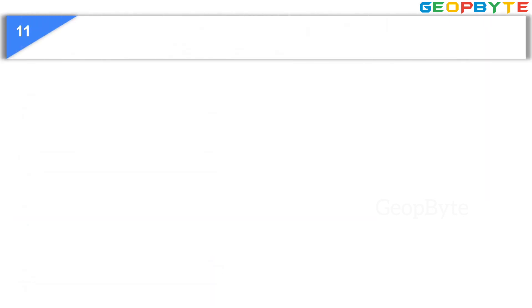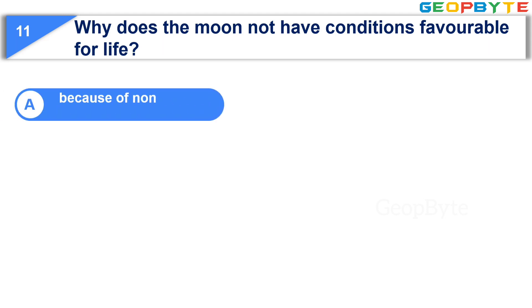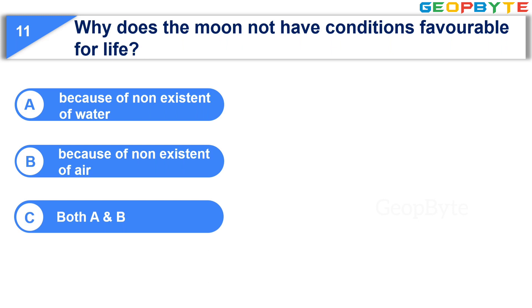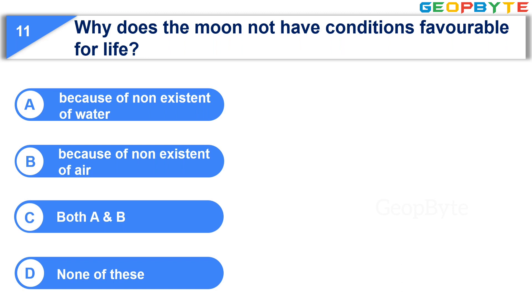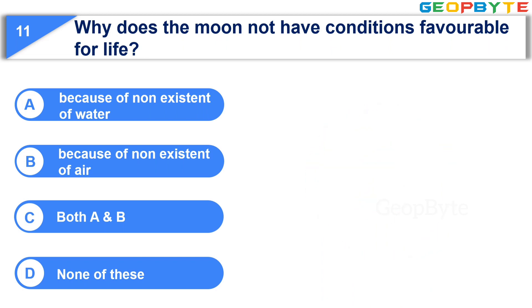Moving to the eleventh question: Why does the moon not have conditions favorable for life? Option A: Because of non-existence of water. Option B: Because of non-existence of air. Option C: Both A and B. Option D: None of these. Your time starts now. Your time is up and the correct answer is Option C: Both A and B — that is, because of non-existence of water and non-existence of air.